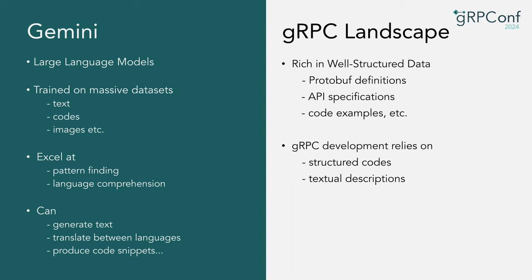Let's talk about what Gemini is. Gemini is a Google-developed large language model trained on massive datasets — text, code, images, and much more. After training, Gemini excels at language comprehension and pattern finding, which means it can generate text, translate between languages — including programming languages, human languages, and machine code — and understand or produce code snippets. gRPC is backed by a thriving open-source community rich in well-structured data: protobuf definitions, API specifications, and countless code examples. All this data serves as a perfect training ground for LLMs like Gemini, making gRPC a well-suited area to adopt large language model technologies.